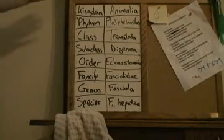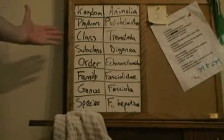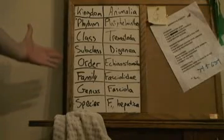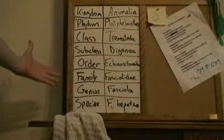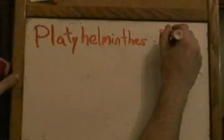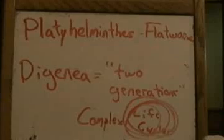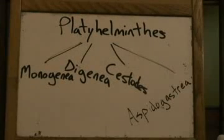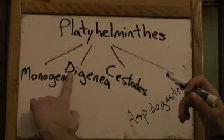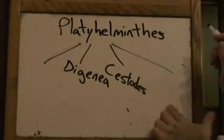The sheep liver fluke belongs to the kingdom Animalia, the phylum Platyhelminthes, the class Trematoda, subclass Digenea, order Echinostomida, family Fasciolidae, and genus Fasciola. Most importantly, Fasciola hepatica belongs to the phylum Platyhelminthes, or the flatworms, and the subclass Digenea, which means two generations. This group is commonly called the flukes, and their name refers to their tendencies to have very complex life cycles. Of the four strictly parasitic subclasses of Platyhelminthes, only Cestoidea, the tapeworms, and Digenea, the flukes, have impacting virulence on humans and livestock.